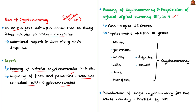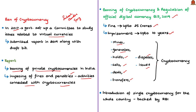This bill imposes a fine of up to ₹25 crores and a jail term of up to 10 years for whoever directly or indirectly mines, generates, holds, sells, deals in, transfers, disposes of, or issues cryptocurrency — including issuing cryptocurrency-related financial products, using it as a means of raising funds, or as a means of investment. As an alternative to private cryptocurrencies, the committee also recommended introducing a single RBI-backed cryptocurrency for the entire country.